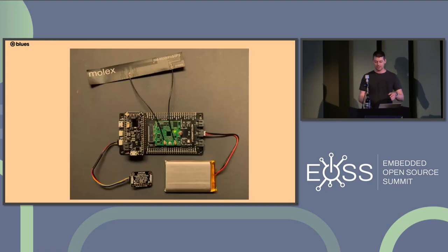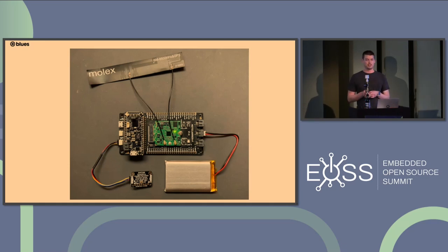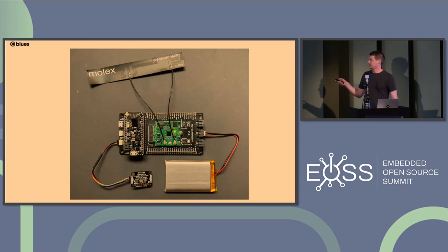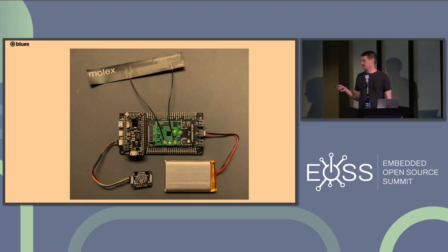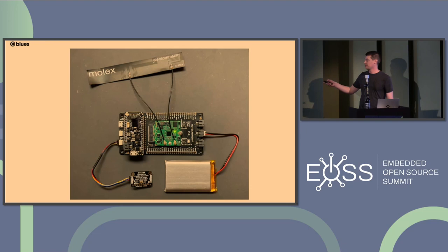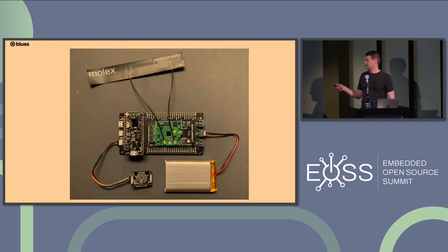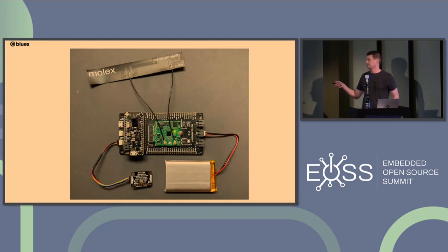The hardware looks like this — I have it on my desk monitoring the temperature in the conference room. This is our Blues Starter Kit: the Notecard, a Notecarrier we call the Notecarrier F (the F is for feather, as it has feather-compatible header sockets), and a microcontroller we make called the Swan, which has an STM32 chip on board. The Swan can accept Arduino firmware, Zephyr firmware, or CircuitPython, so it gives us options. For this project, the Swan is the MCU holding the firmware driving the application.